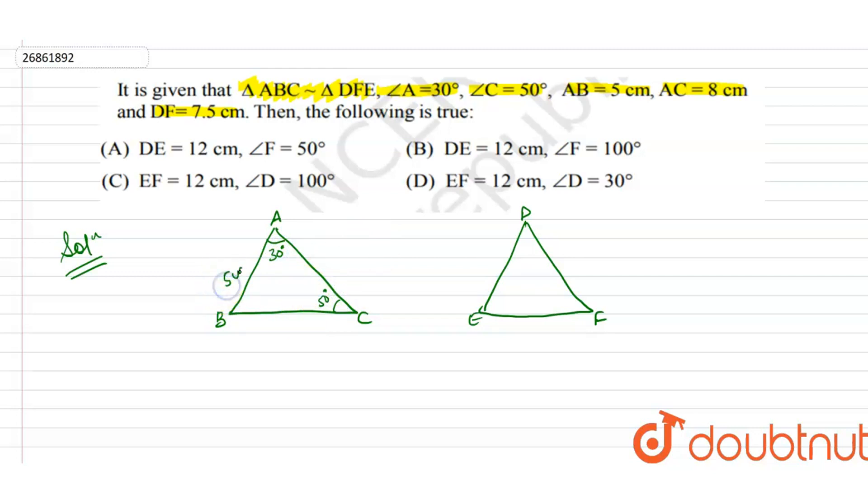AB is 5.5 cm, AC is 8 cm, and DF is 7.5 cm. Triangle ABC is similar to triangle DFE. A corresponds to D, B vertex corresponds to F, and C vertex corresponds to E.